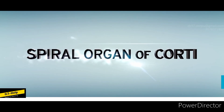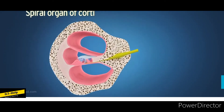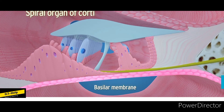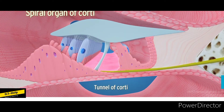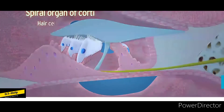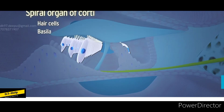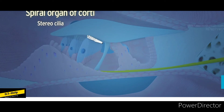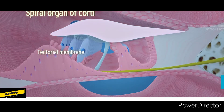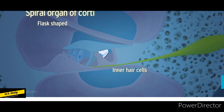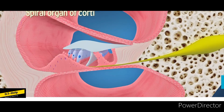The spiral organ of Corti is the organ of hearing, situated on the basilar membrane. It includes the tunnel of Corti, which is formed by inner and outer rod cells and contains a fluid called cortilymph. The hair cells are receptor cells located on the basilar membrane; their apical part contains stereocilia, and the apical surface is covered by the tectorial membrane. Inner hair cells are flask-shaped, arranged in a single row, and are richly supplied by cochlear nerve fibers, helping in transmission of auditory impulses.